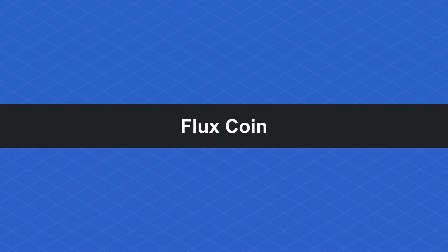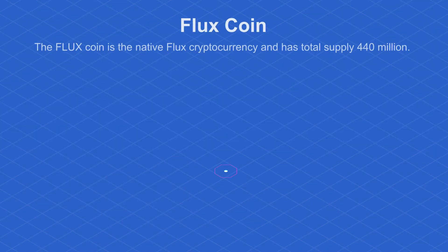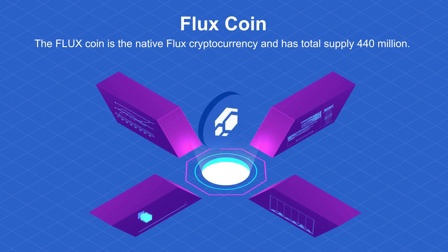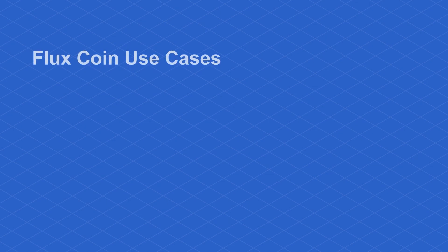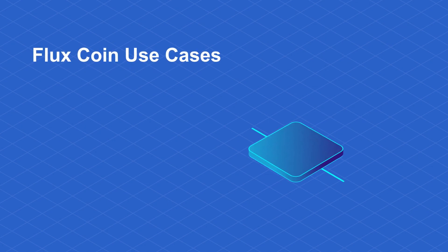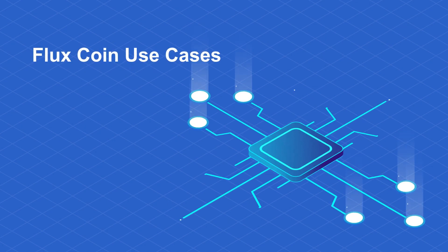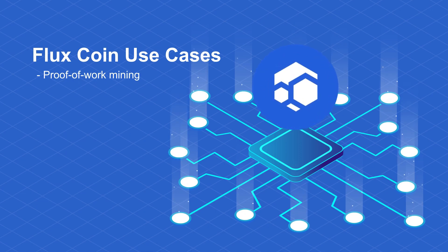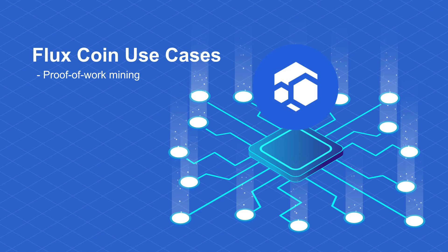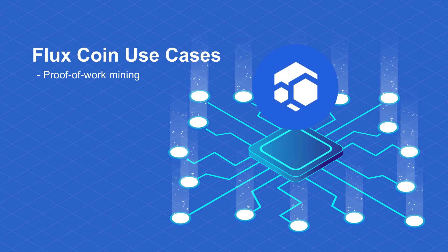Flux Coin is the native Flux cryptocurrency and has a total supply of 440 million. Flux Coin will carry a variety of use cases within the Flux ecosystem, including proof of work mining. Users running Flux nodes can mine for Flux tokens by participating in the proof of work consensus mechanism to secure the Flux network.